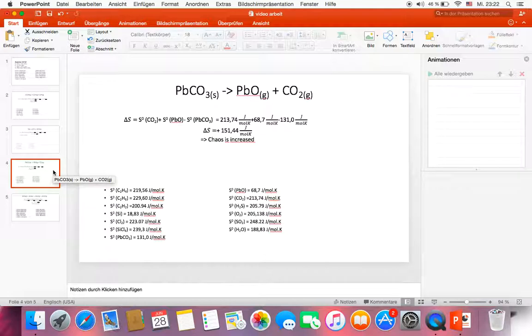Delta S of reaction c is equal to entropy S of carbon dioxide plus entropy S of lead oxide minus entropy S of lead carbonate. And the amount of delta S is plus 151.44 joules per mole kelvin. In this case, the chaos is increased because of the plus sign.